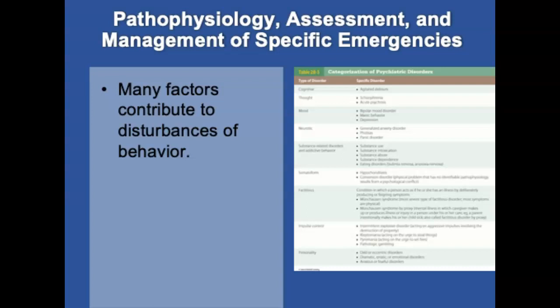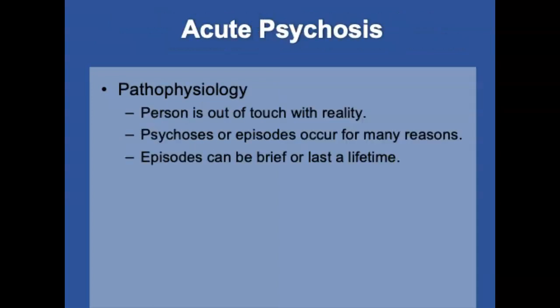Many factors contribute to disturbances of behavior, grouped into several common areas. Acute psychosis is a state of delusion in which a person is out of touch with reality — reality and fantasy are blurred. Psychosis occurs for many reasons including biologic or organic causes, mental illness, drug abuse, intense stress, delusional disorders, and schizophrenia. Psychotic episodes can be brief or last a lifetime, and disorganization and disorientation are common ways various conditions present.